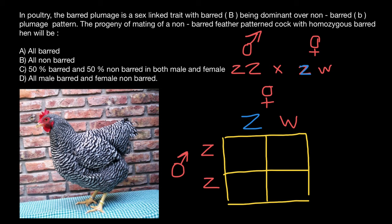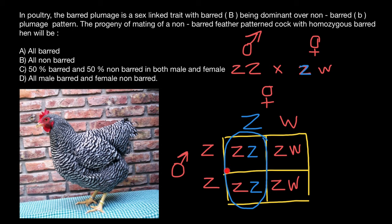Take a look. The progeny from the father's side can only get the Z chromosome, which is going to carry the recessive allele on it. And from the mother's side, the progeny can get either the Z chromosome or the W chromosome. Now let's analyze the progeny. 50% of the progeny are going to be males. Males are going to be heterozygous, would carry one recessive allele and one dominant allele, and their pattern is going to be barred, just like their mother.